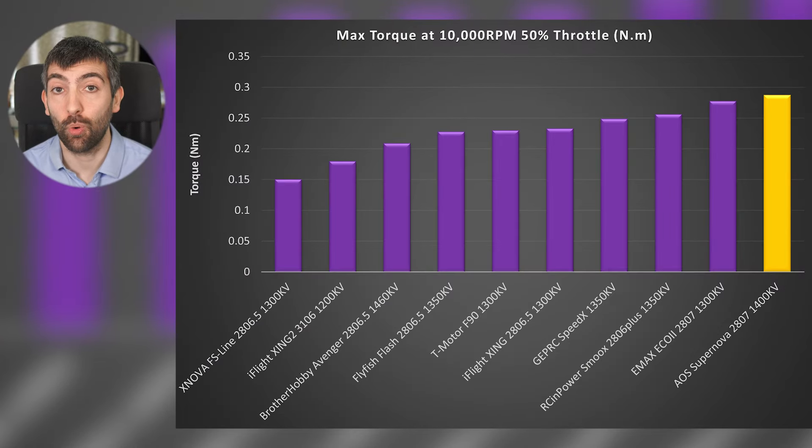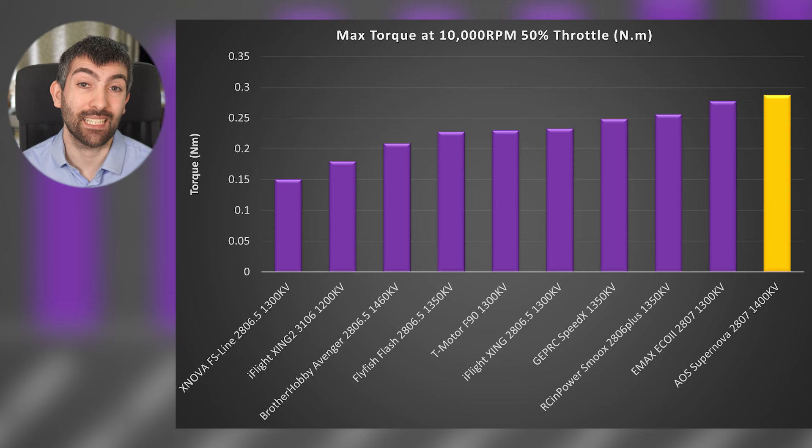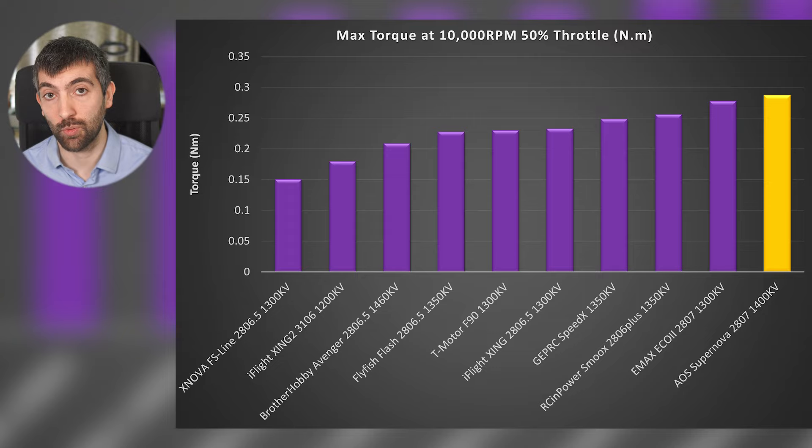This chart shows the maximum torque the motors can produce on my flywheel dyno test at 10,000 rpm, 50% throttle, and we can see that the Supernova 2807 tops the charts here and it beats out the Emax Eco 2 despite weighing 4 grams less than that motor. And that's down to the magnetic design—improved magnetic design gives more torque—and also the higher kV that the Supernova has, which again gives it more torque, particularly at higher rpms. So we should expect that torque advantage to increase as we move up in rpm.